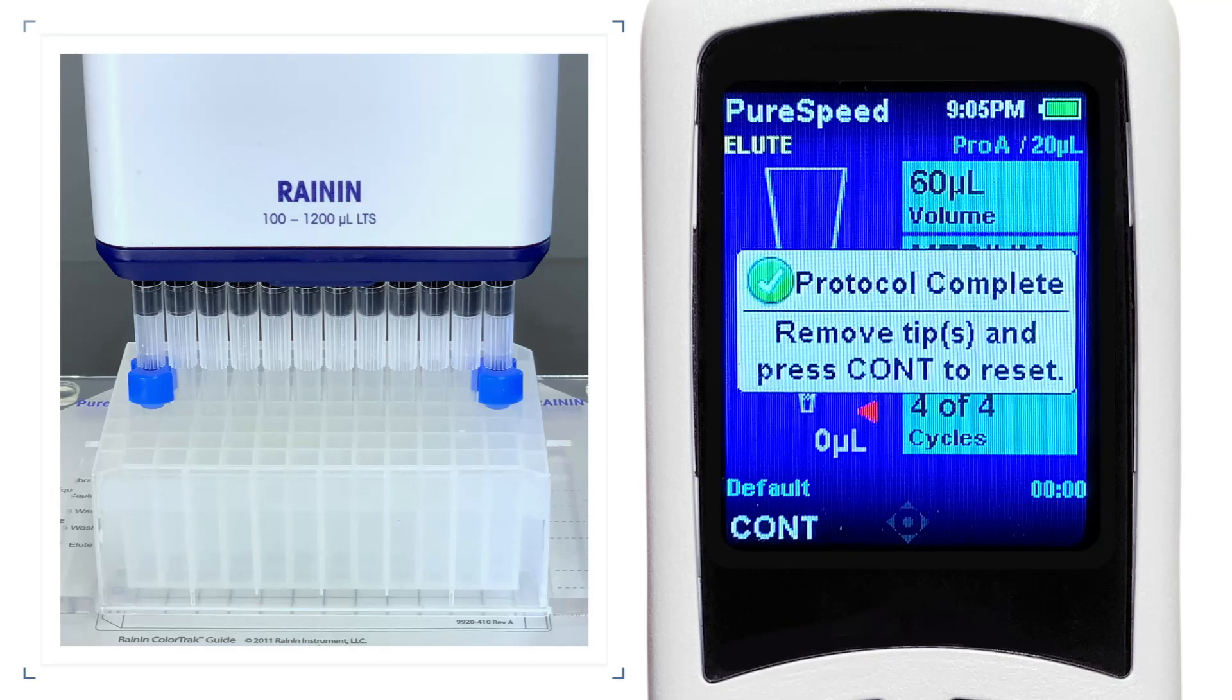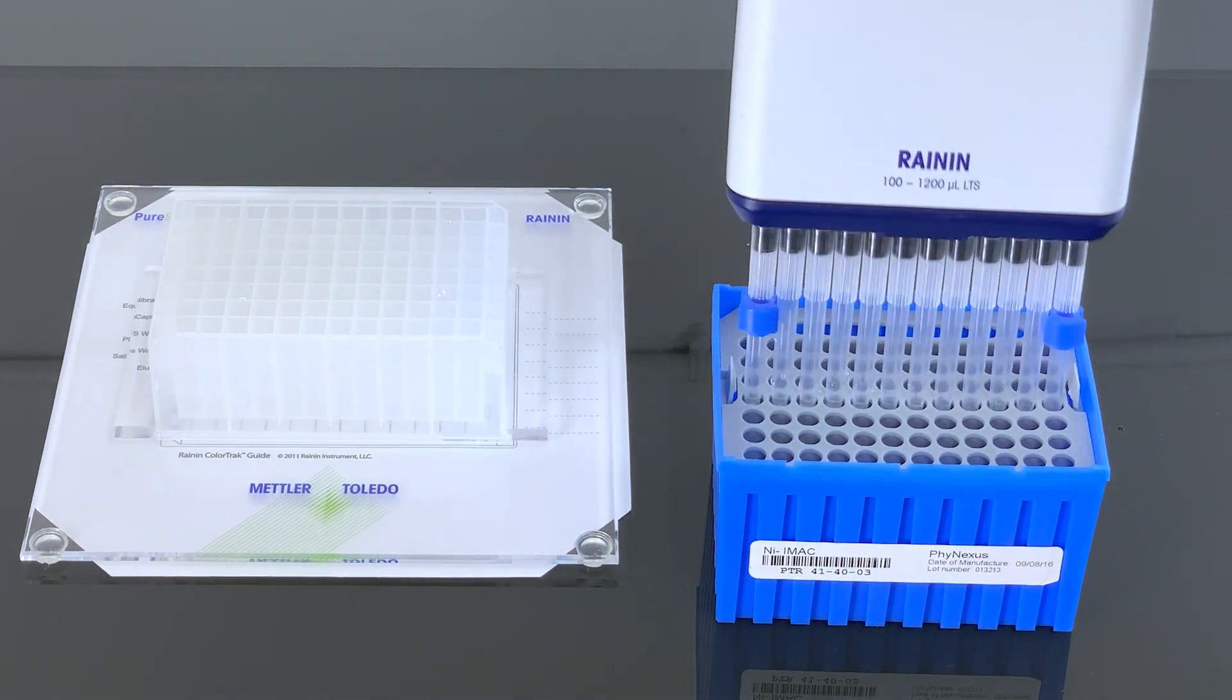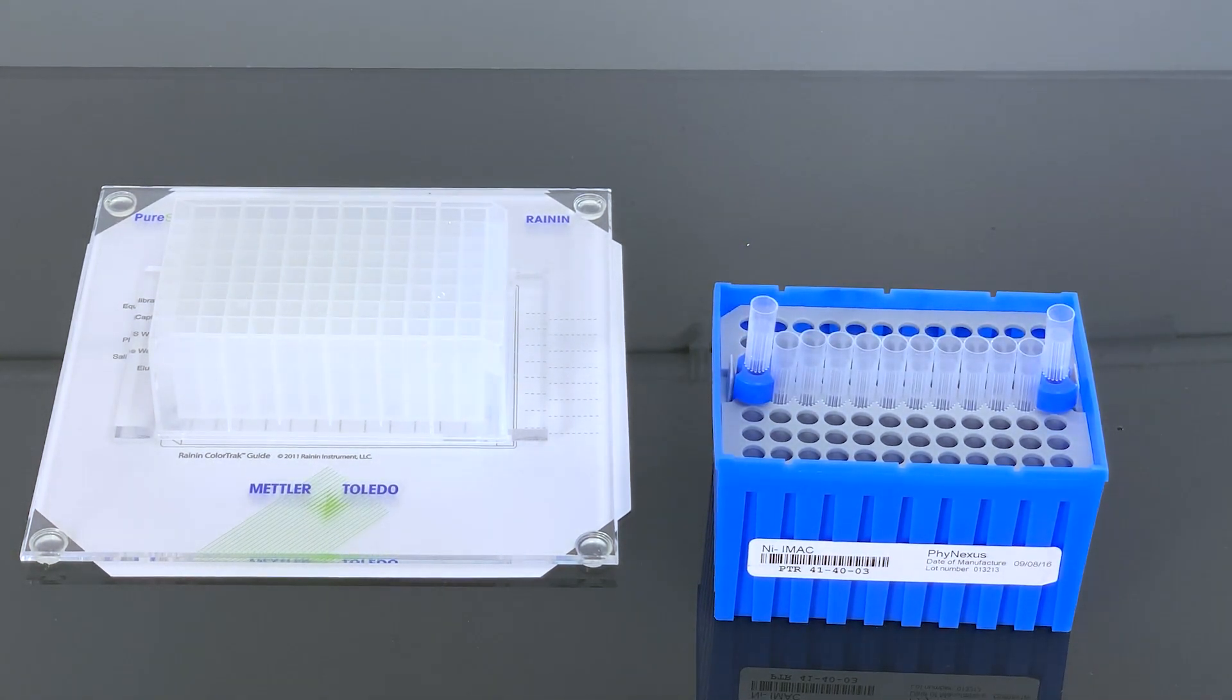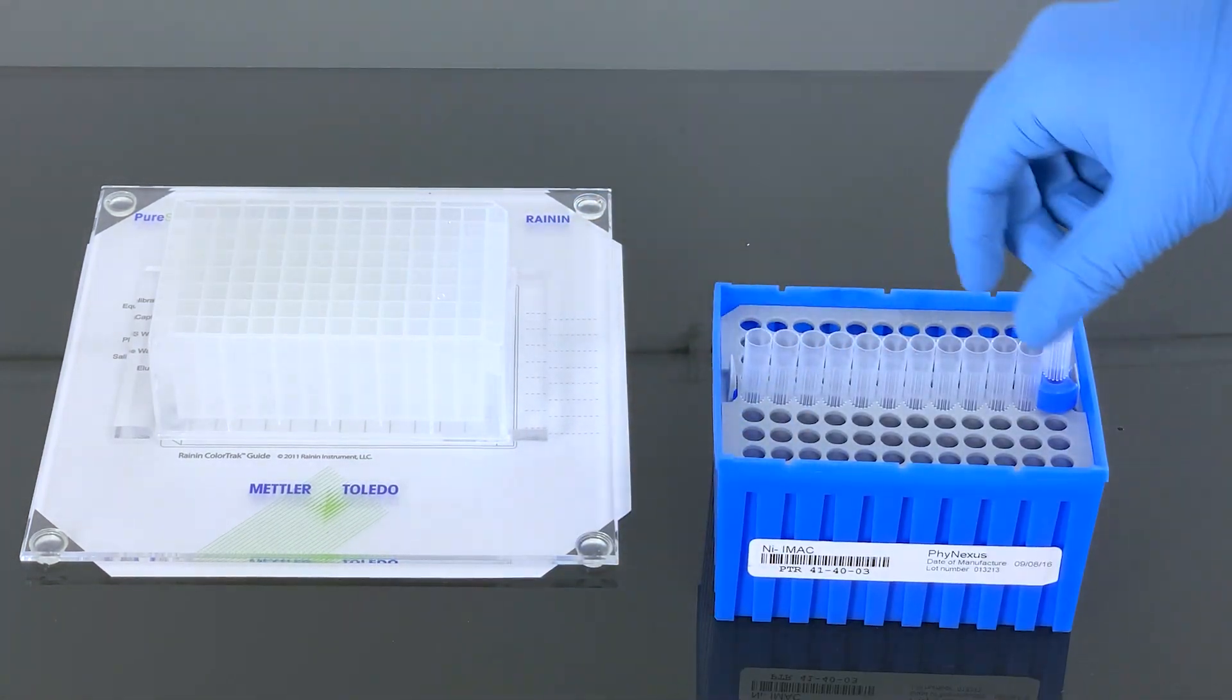When the entire method execution is complete, you will be asked to remove the tips. Remove the pipette from the deep well plate. Then remove the adapters from the tips and dispose the Phi-Tip columns.